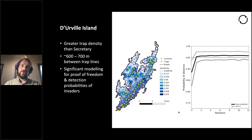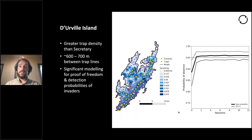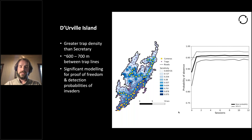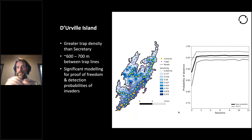The other big one happening right now is Durville Island — within the next year to two years it will start. While the trap density is greater than Resolution and Secretary Islands, it can't be like Waiheke — it's more remote, so it's going to be between 600 and 700 metres between trap lines. There are lots of cameras being used for detection — 147 cameras — and the hope is that using a detection network you can focus down onto where there are survivors. This is proof-of-absence modelling: it's basically the probability of detecting an animal with a given device.